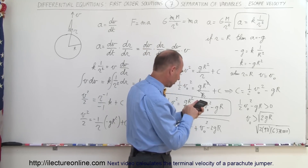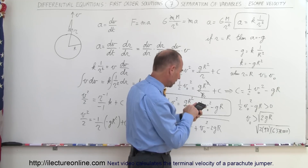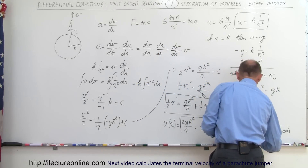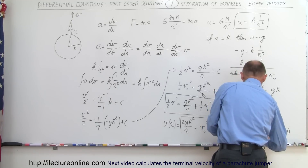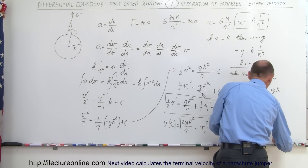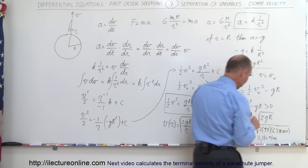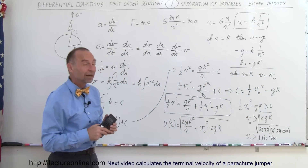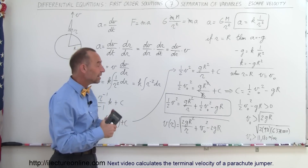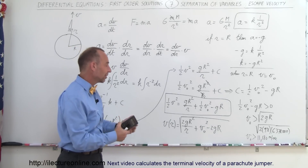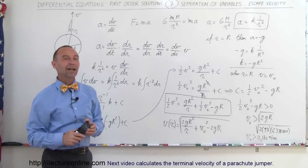Computing: square root of 6,378,000 times 2 times 9.8 gives us that the initial velocity must be greater than 11,180 meters per second — roughly 7 miles per second, or a little over 11 kilometers per second. That's the initial velocity a spaceship needs to escape the Earth.